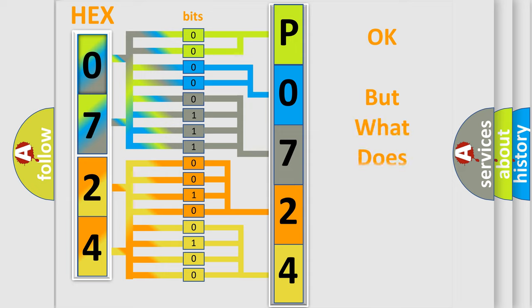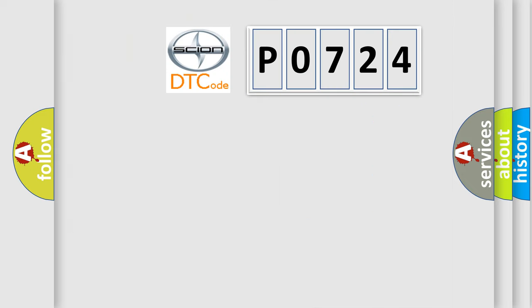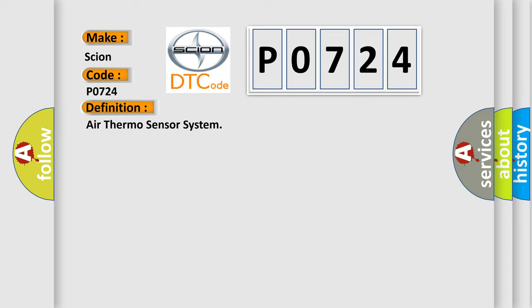We now know how the diagnostic tool translates received information into a more comprehensible format. The number itself does not make sense to us if we cannot assign information about what it actually expresses. So, what does the Diagnostic Trouble Code P0724 interpret specifically for SCION car manufacturers? The basic definition is: Air Thermo Sensor System.